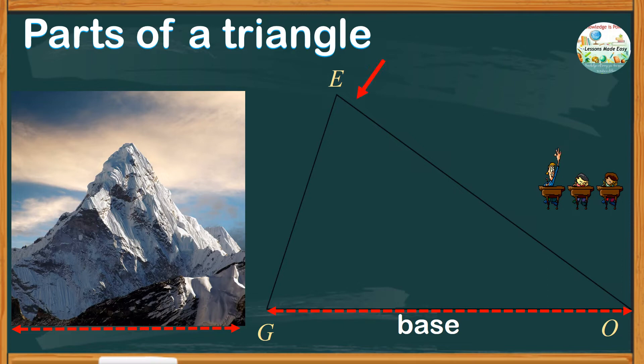And opposite the base is the peak, or the highest point of the mountain. In this given example, the peak is angle E, and it is also called the peak angle.